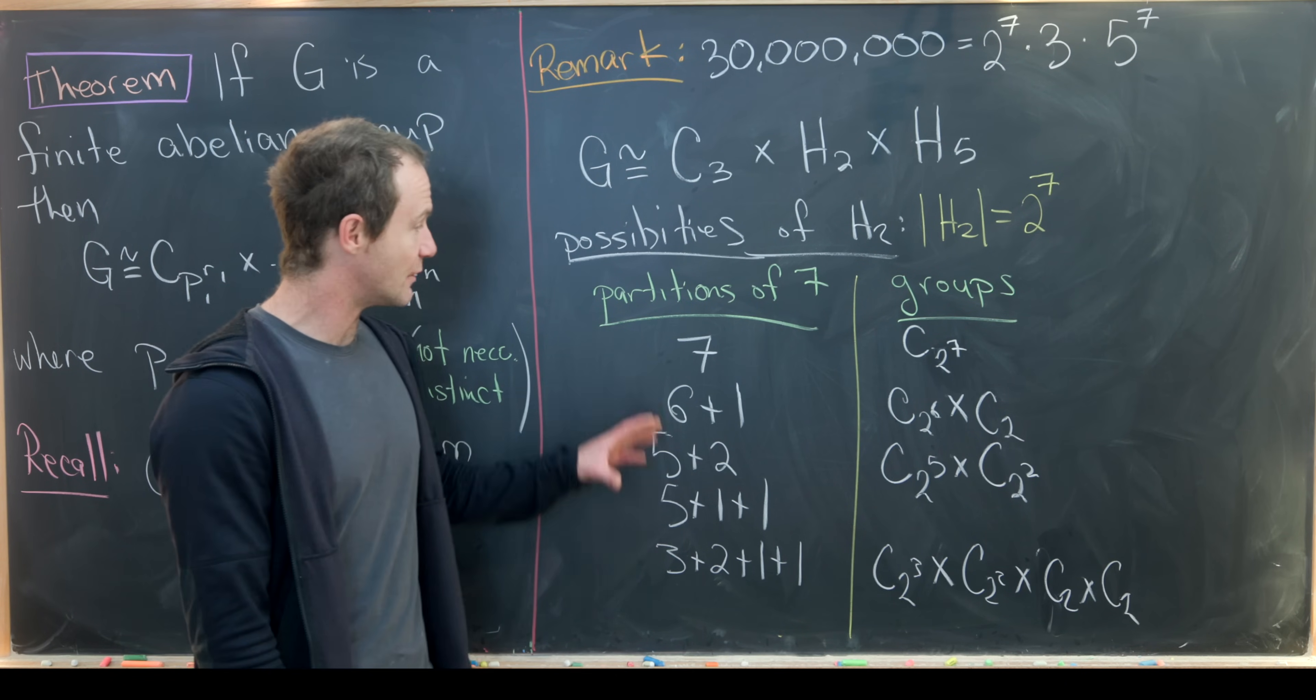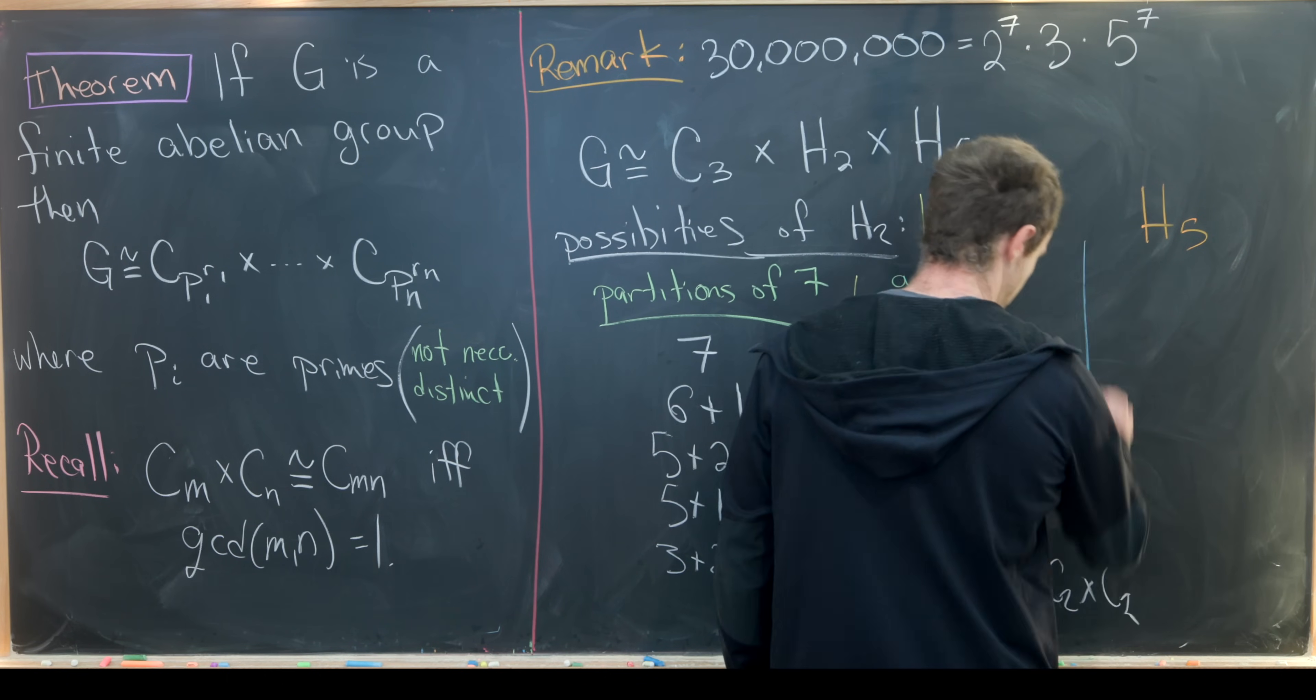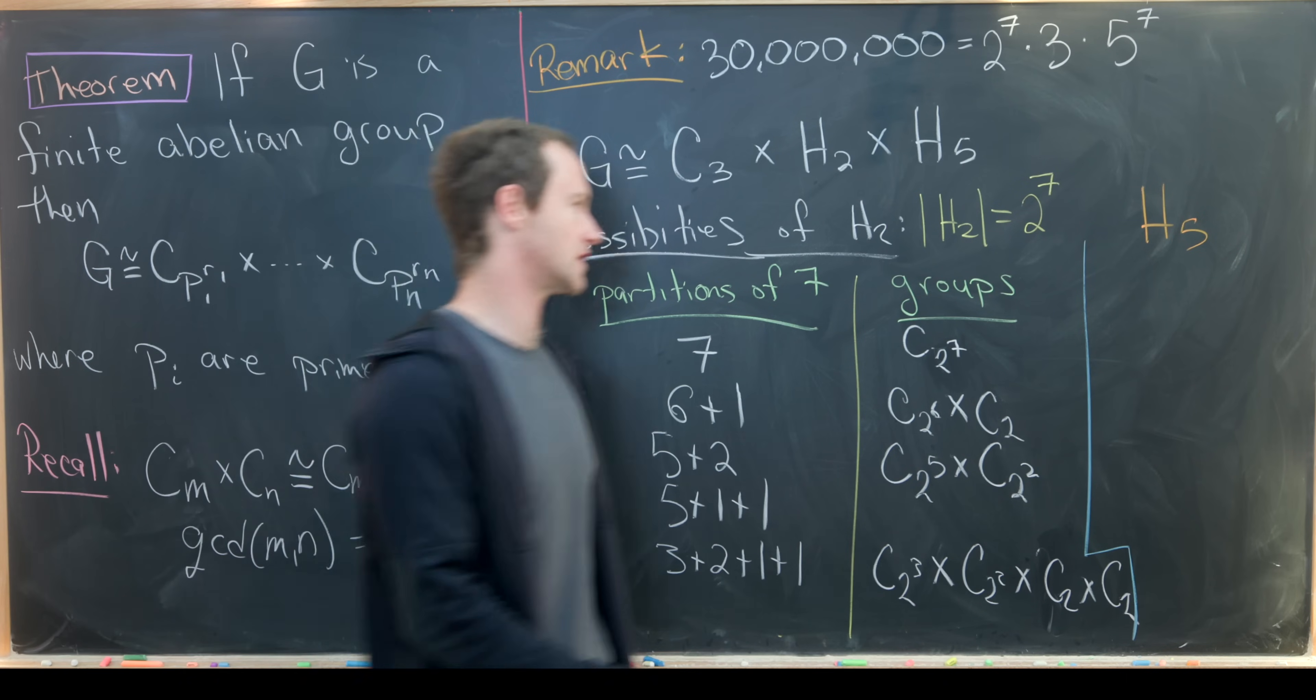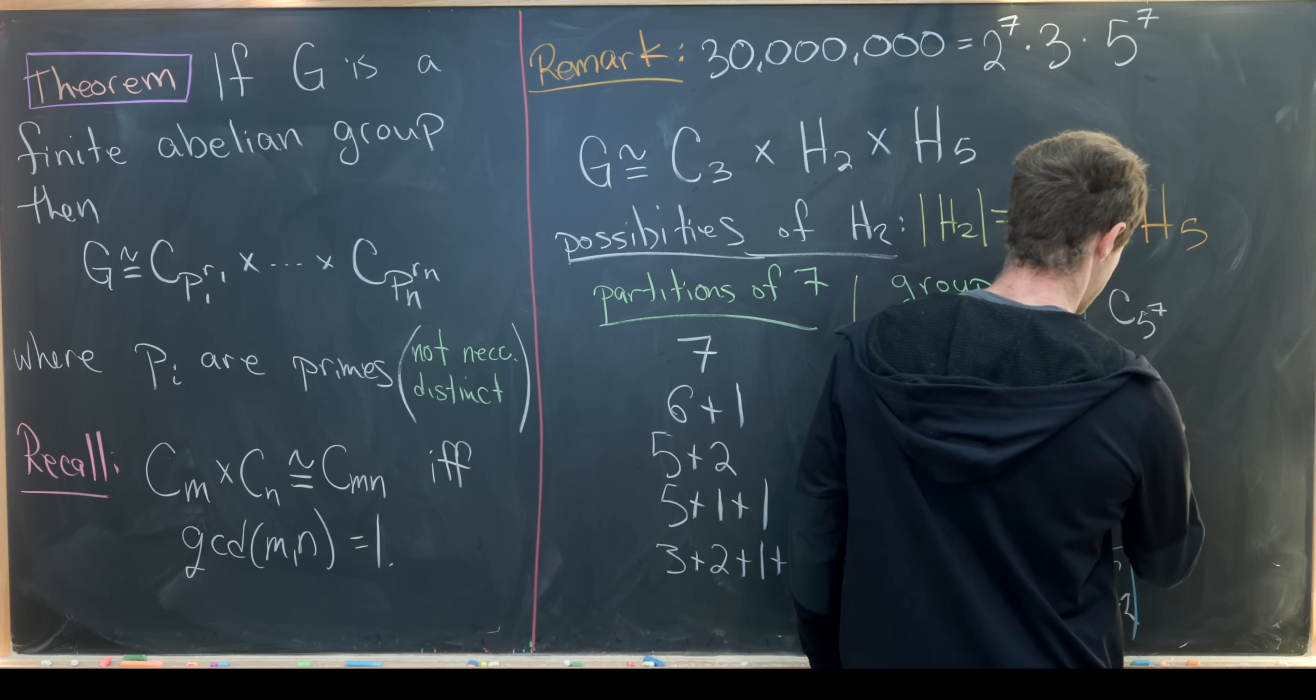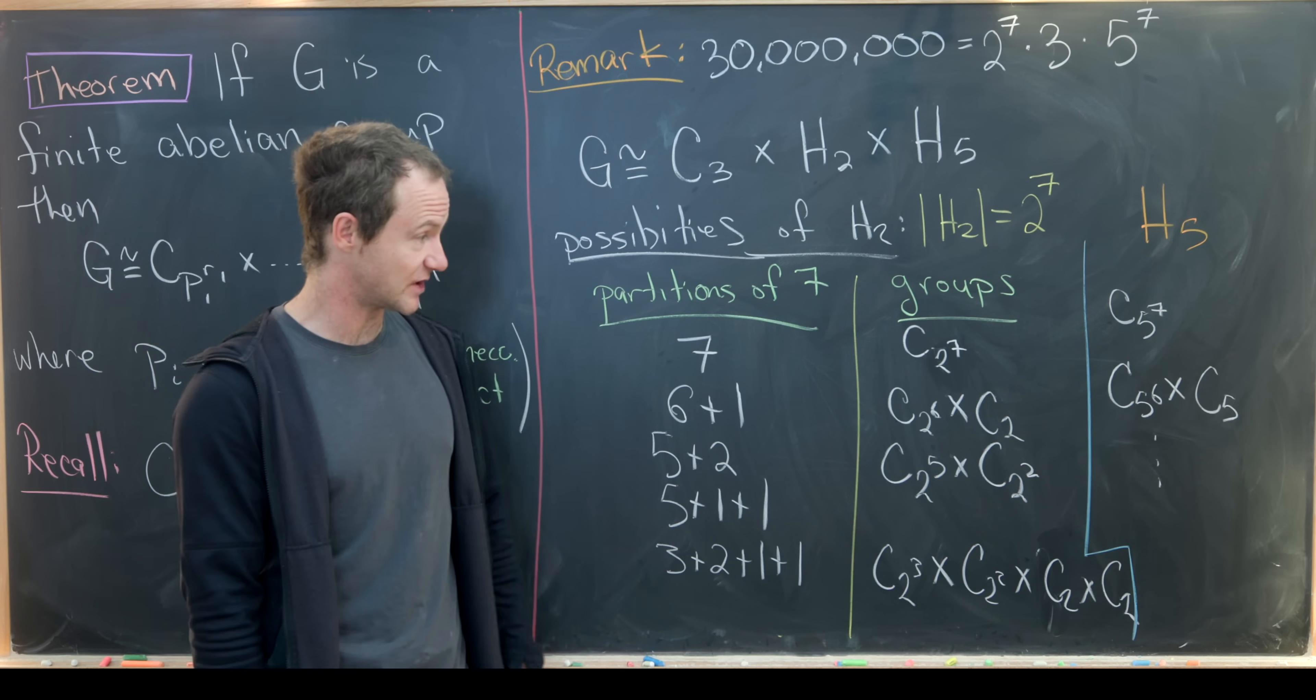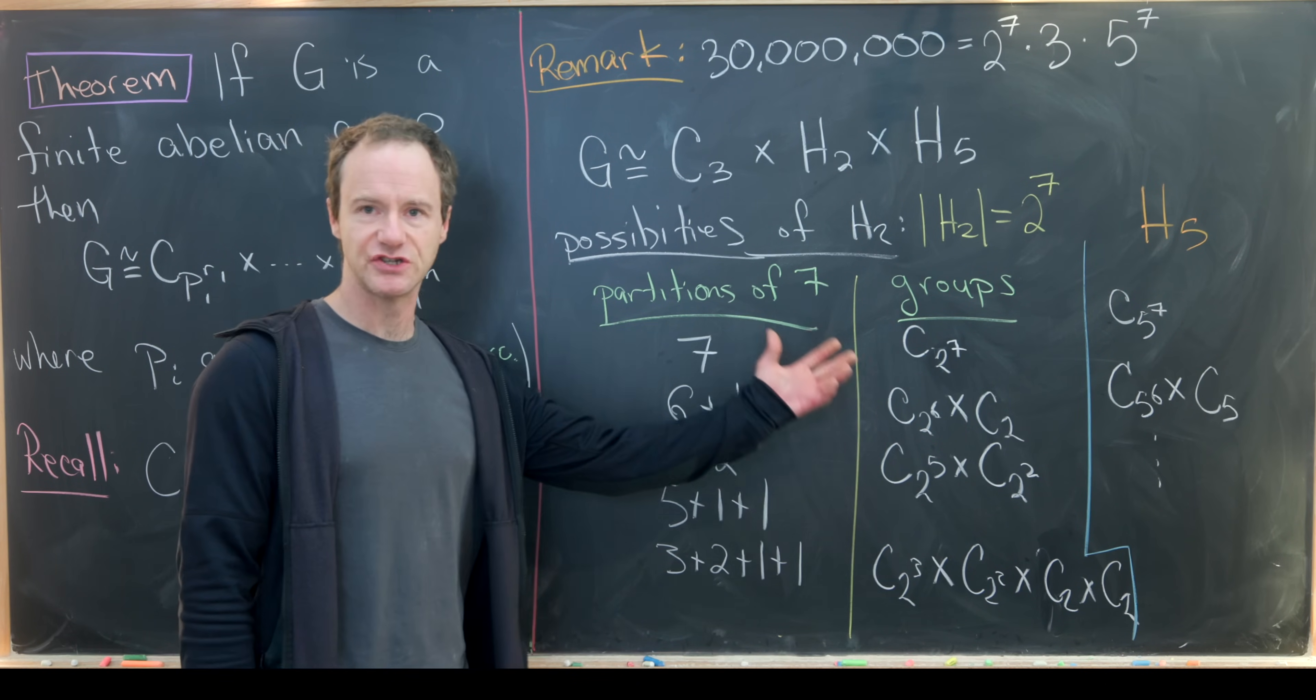And now you could imagine we would have exactly the same possibilities for H5. So let's make another chart for H5. It's just the order of these will be C 5 to the 7, 5 to the 6, and so on. So here we have C 5 to the 7, C 5 to the 6 cross C 5, and so on. This would be the rotational symmetries of a 5 to the 7 gone. This is the product of the rotational symmetries of a 5 to the 6 gone cross a regular pentagon.